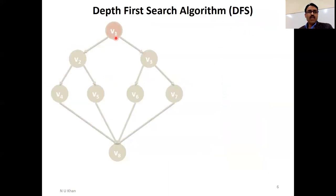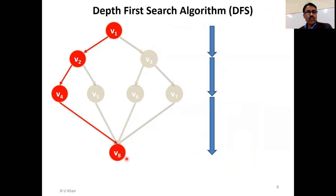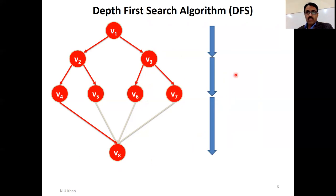The traversal order for this graph is: V1, V2, V4, V8, V5, V3, V6, V7. This is the depth-wise visiting order. V1 to V2 goes to one depth, then V4, then V8 — going to the full depth of the graph — and then back through V5, V3, V6, and V7. This is the complete DFS traversal order.